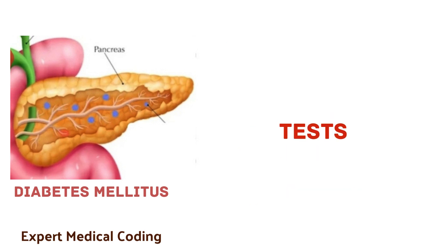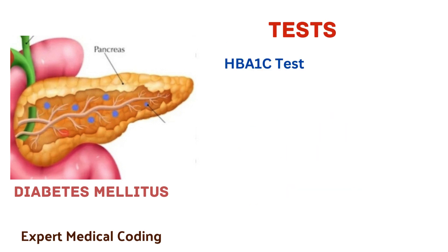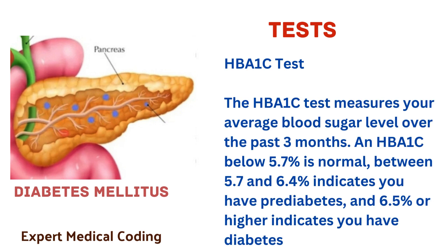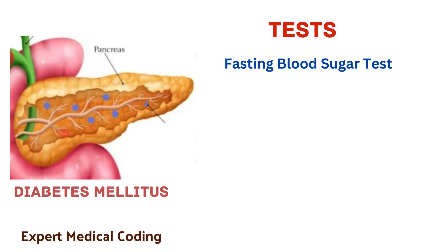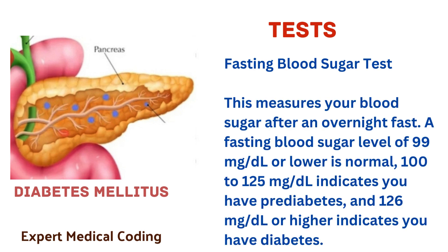Now let us discuss about the tests. The first test is the HbA1c test. The HbA1c test measures your average blood sugar level over the past 3 months. An HbA1c below 5.7% is normal; between 5.7% and 6.4% indicates prediabetes; and 6.5% or higher indicates diabetes. The next test is the fasting blood sugar test. This measures your blood sugar after an overnight fast. A fasting blood sugar level of 99 mg/dL or lower is normal, 100 to 125 mg/dL indicates prediabetes, and 126 mg/dL or higher indicates diabetes.